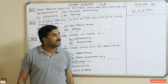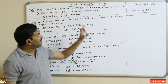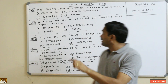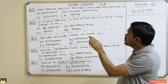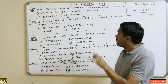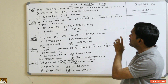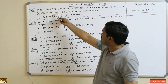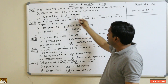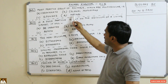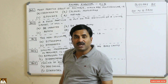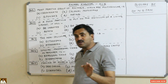Students, today we are going to study MCQs based on the Animal Kingdom. The first question is: most primitive group of animals which are multicellular. The options are Cnidaria, colonial protozoans, sponges, and none.